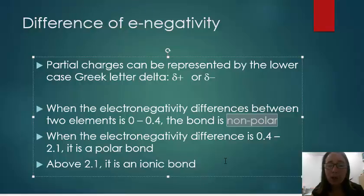When the electronegativity difference is between 0.4 and 2.1, then it is a polar bond, meaning there's an unequal sharing of electrons. And above 2.1, that's considered to be an ionic bond.